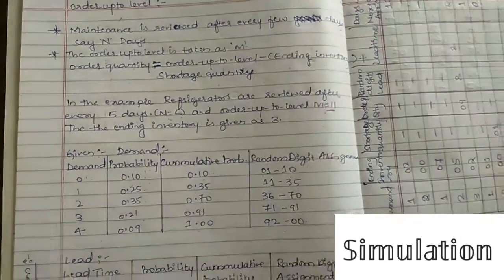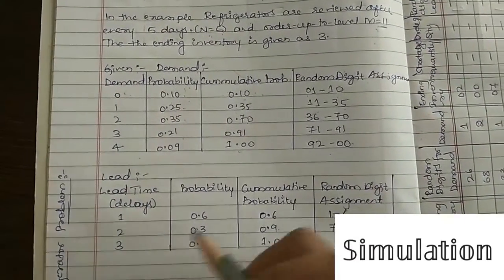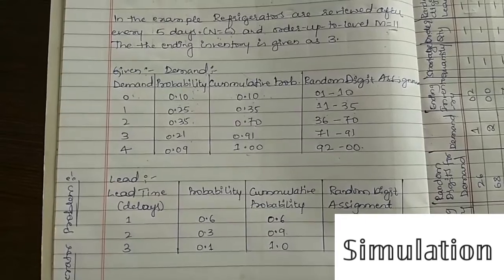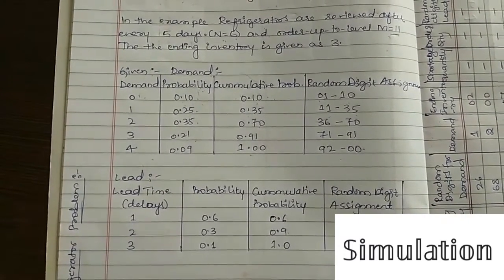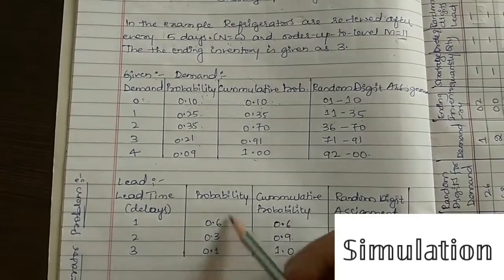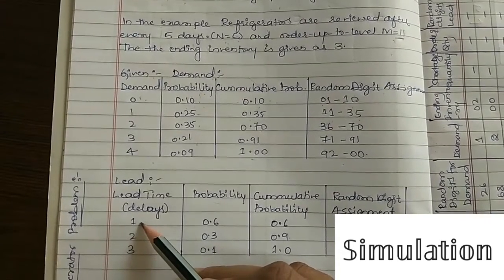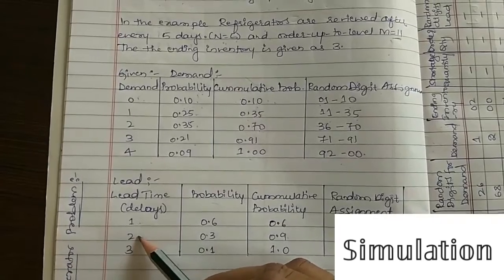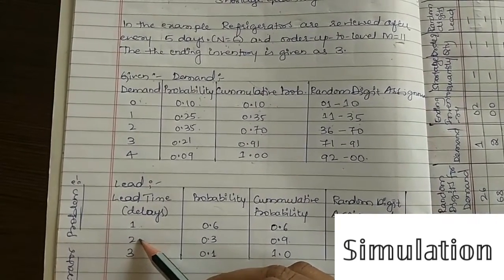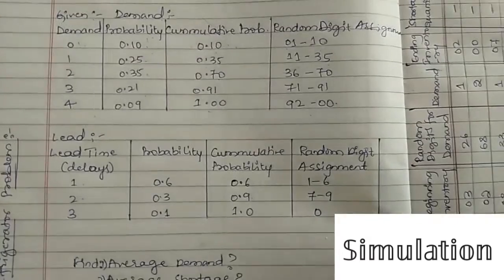Lead time is also given. Lead time means the time from when you place an order until it arrives — the delay time. If the lead time is 1, the order arrives after 1 day. If the lead time is 2, then after placing the order today, you get the order after 2 days.